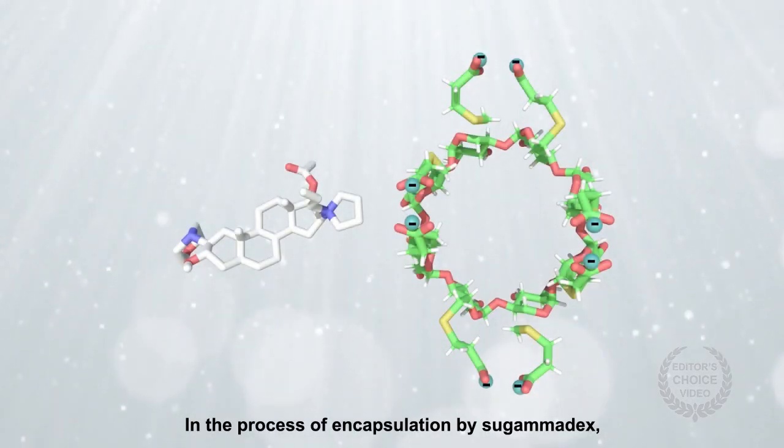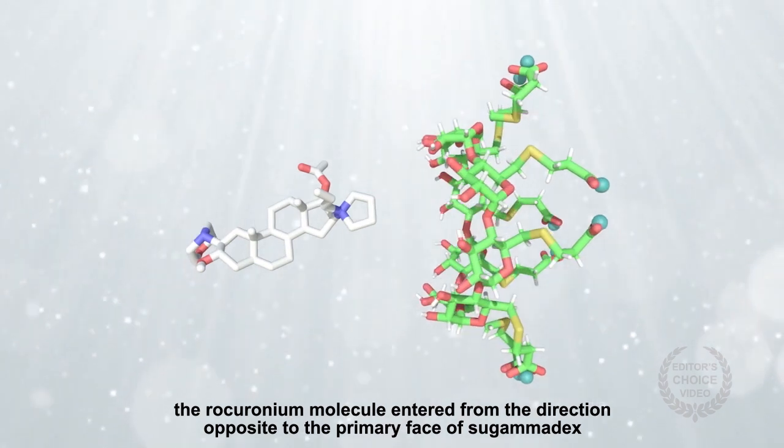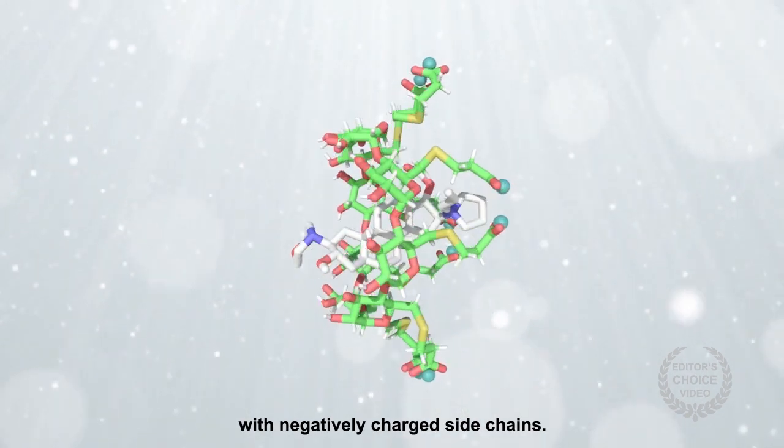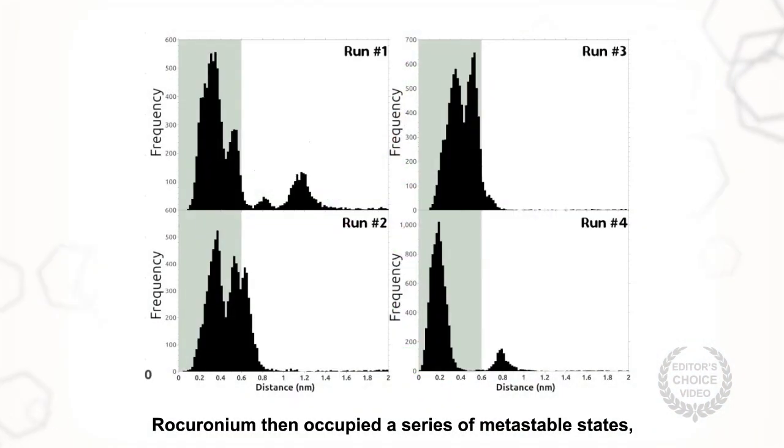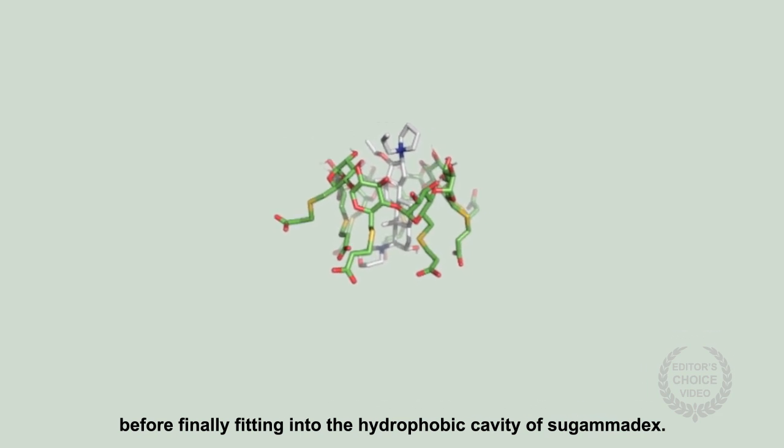In the process of encapsulation by Sugammadex, the rocuronium molecule entered from the direction opposite to the primary face of Sugammadex with negatively charged side chains. Rocuronium then occupied a series of metastable states before finally fitting into the hydrophobic cavity of Sugammadex.